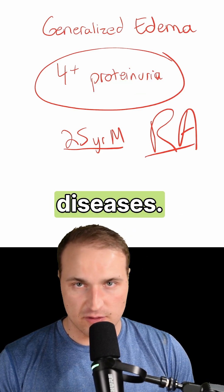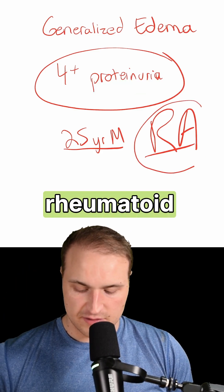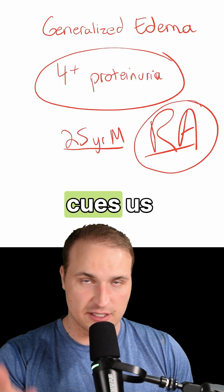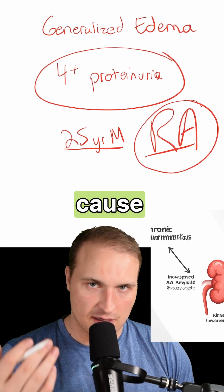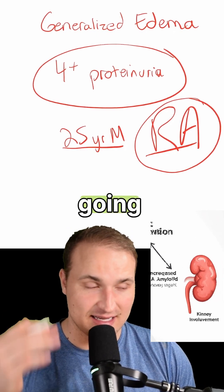Long-standing inflammatory diseases should make you think of amyloidosis. This rheumatoid arthritis cues us into chronic inflammation, which causes an increase of amyloid that then involves the kidney.